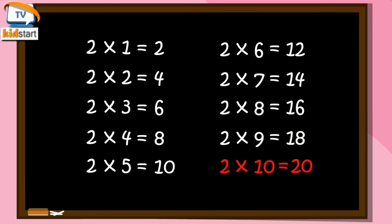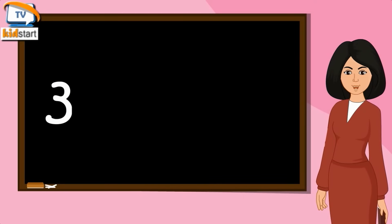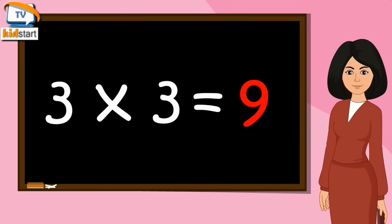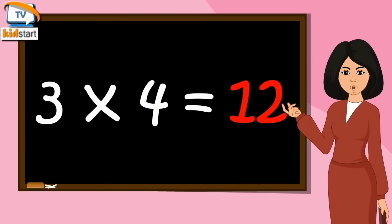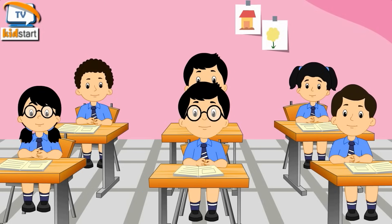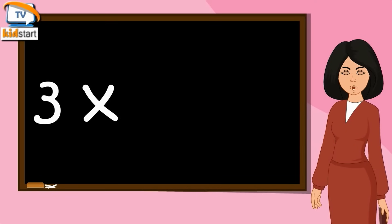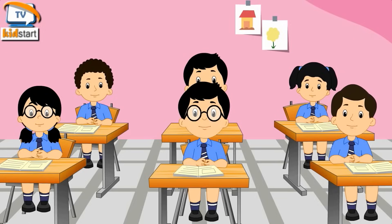Two Tens are Twenty. Three Fives are Fifteen. Three Sixes are Eighteen. Three Sevens are Twenty One. Three Eights are Twenty Four. Three Nines are Twenty Seven. Three Tens are Thirty.